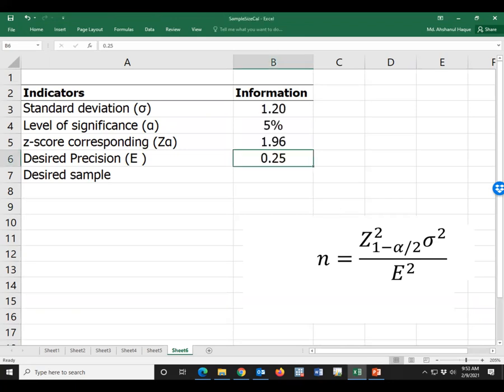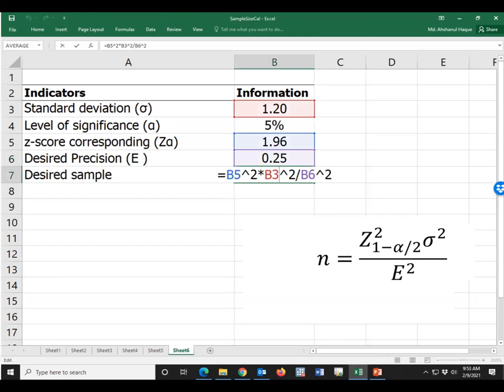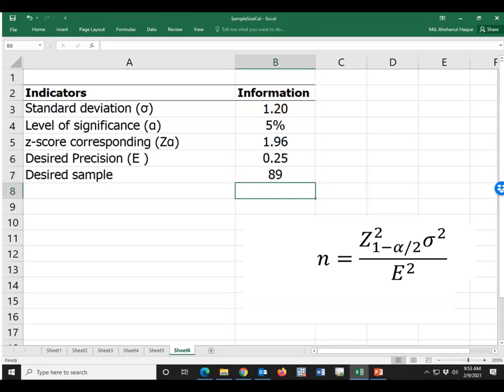So, the standard deviation is 1.2. Alpha value is 5 percent. Then Z score is 1.96. Consider the precision is 0.25. Then, this formula. And we got the required sample size.